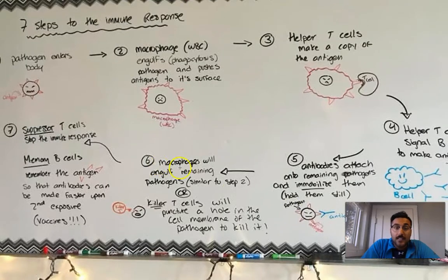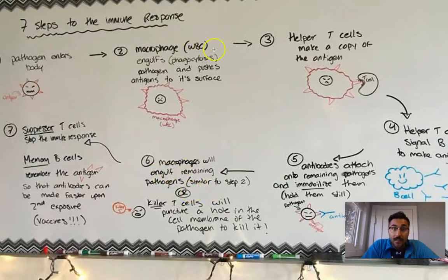Step number six, either a macrophage will come and engulf the remaining pathogens, and then that basically looks just like step two, and then step three will happen, four will happen, five will happen all over again, and the body is just going to tackle the response that way, by taking a macrophage, swallowing up the immobilized pathogen, taking its antigens and expressing it on its surface so that other helper T cells can interact with those antigens and make copies of them so that more B cells can make more antibodies.